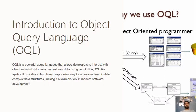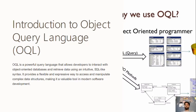What is OQL? OQL is an object query language that allows developers to interact with object-oriented databases and to retrieve data using an intuitive SQL syntax. It provides a flexible and expressive way to access and manipulate complex data structures.